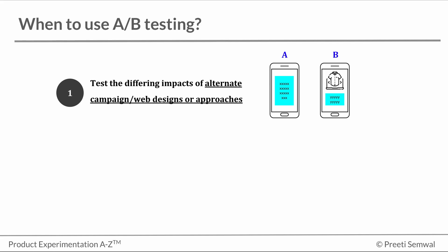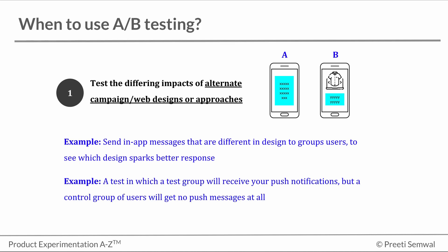Let's go through some more examples. You may send in-app messages that have different designs to different groups of people to see which one gets a better response. Another example is where you send push notifications to one group and do not send them to the control to see whether push notifications invoke better performance.